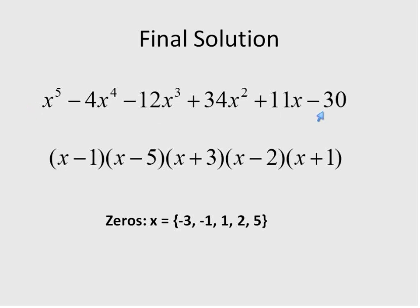So that is how we would solve this massive polynomial into our final answer. Remembering that this means that our zeros are the places where this polynomial crosses the x-axis: negative 3, negative 1, 1, 2, and 5. The opposite of the numbers that are inside of each of these factors.